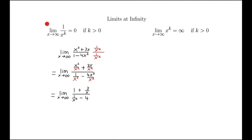And now we can apply this rule to the 1 over x and the 1 over x squared. So the 1 over x is going to go off to 0, because this is 1 over x with k equals 1, and so that goes off to 0 by what we learned earlier.